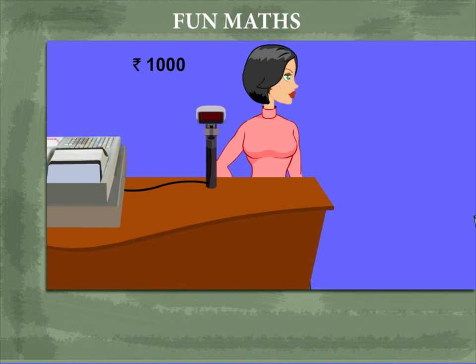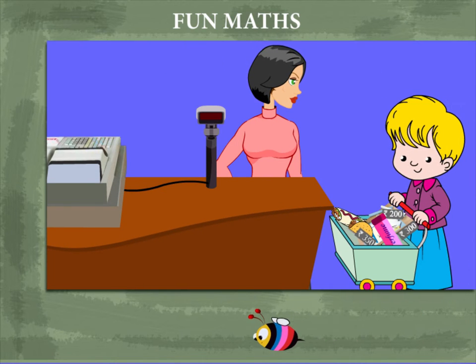Fun maths. Rinki had 1000 rupees to buy things and she is now at the bill counter of the supermarket.